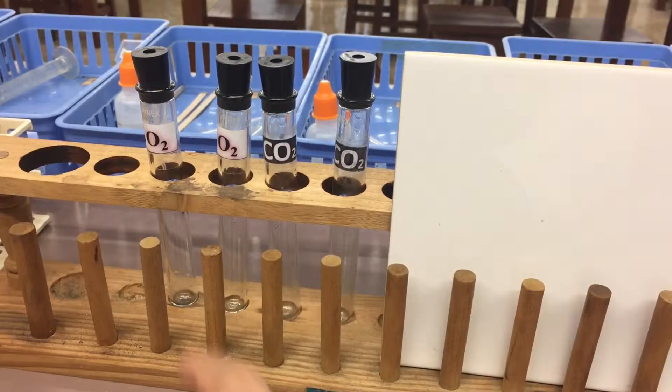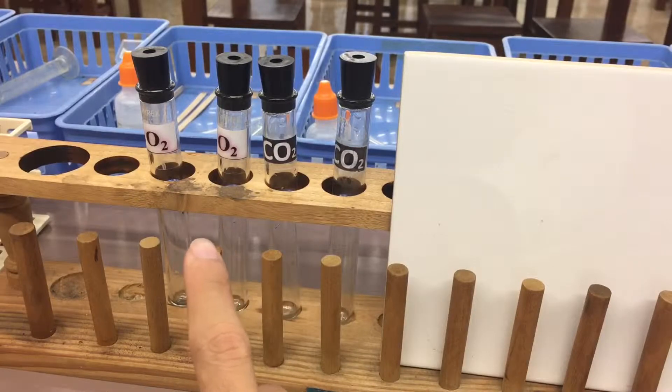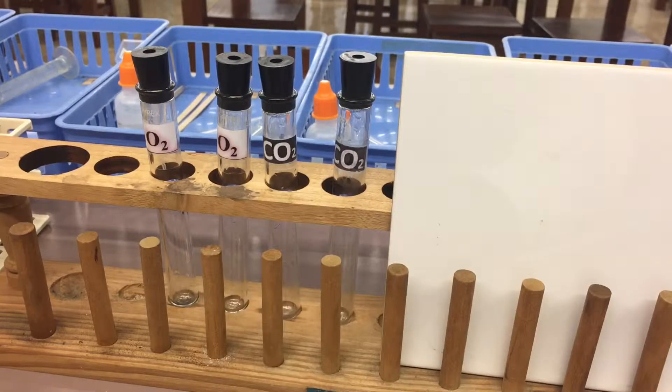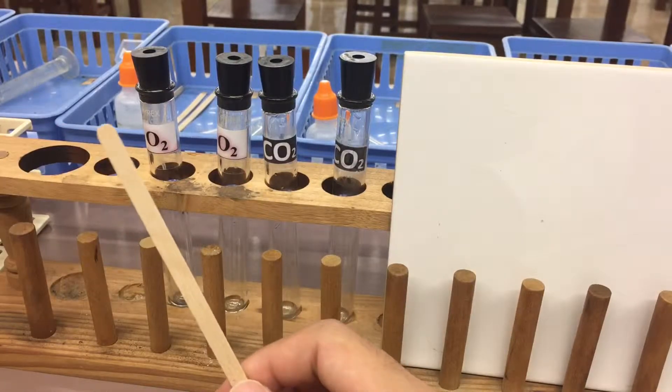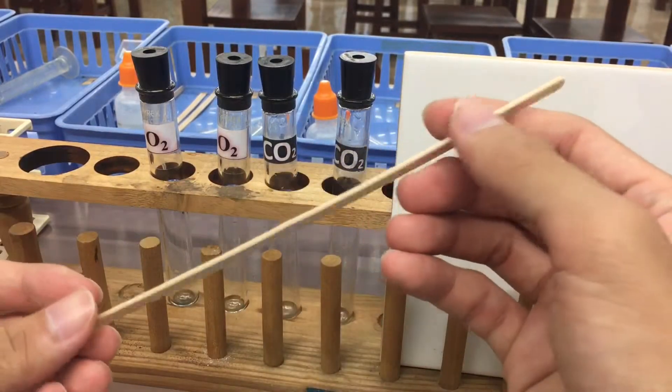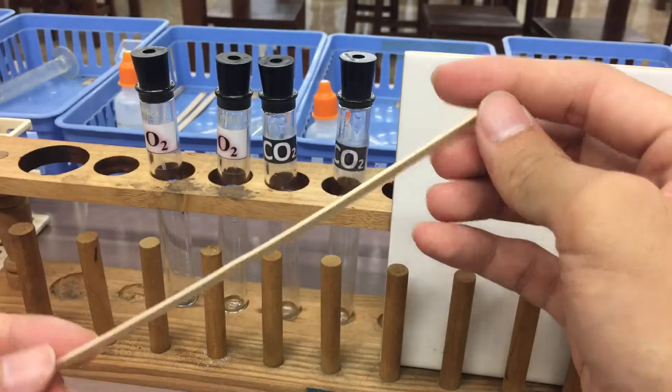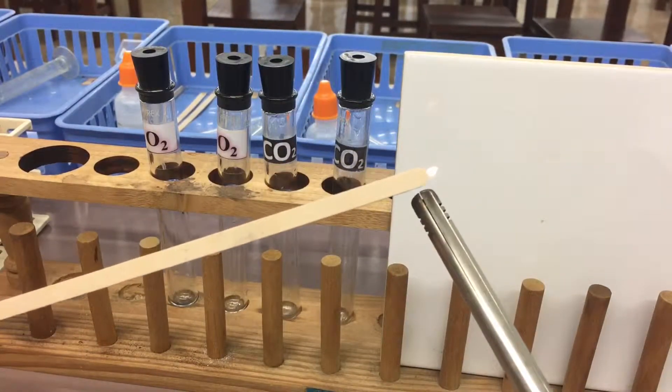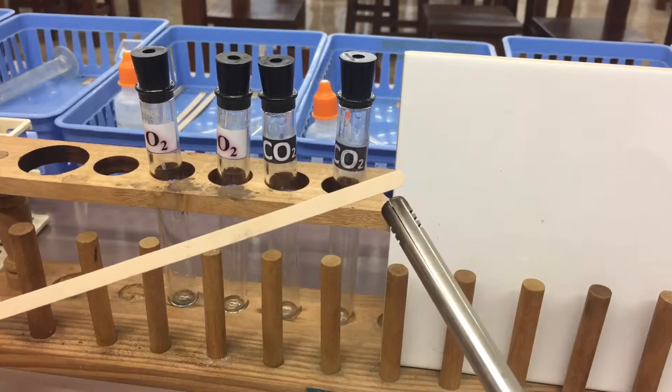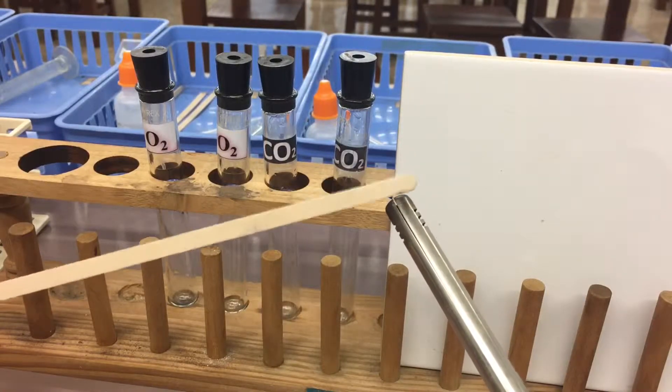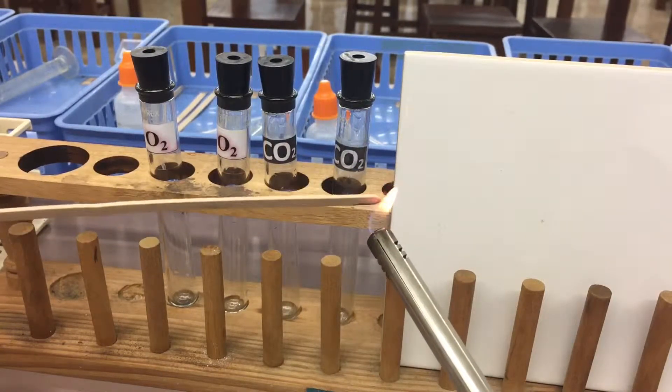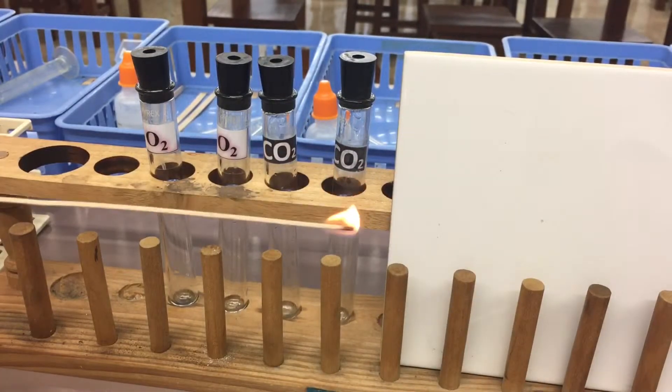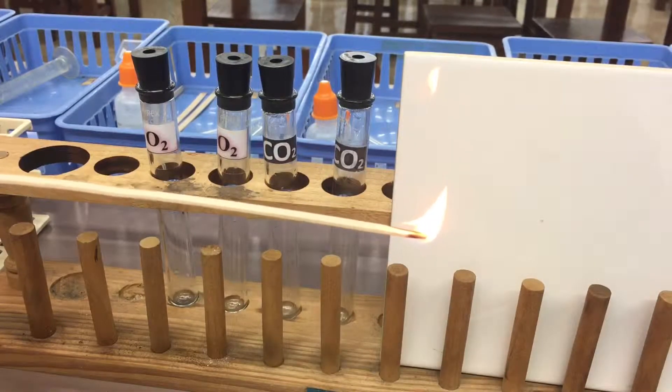For the oxygen, because oxygen supports burning, we will use a method with flame. Here is a wooden splint and we will light it up with lighters. When it burns, this is a burning splint.